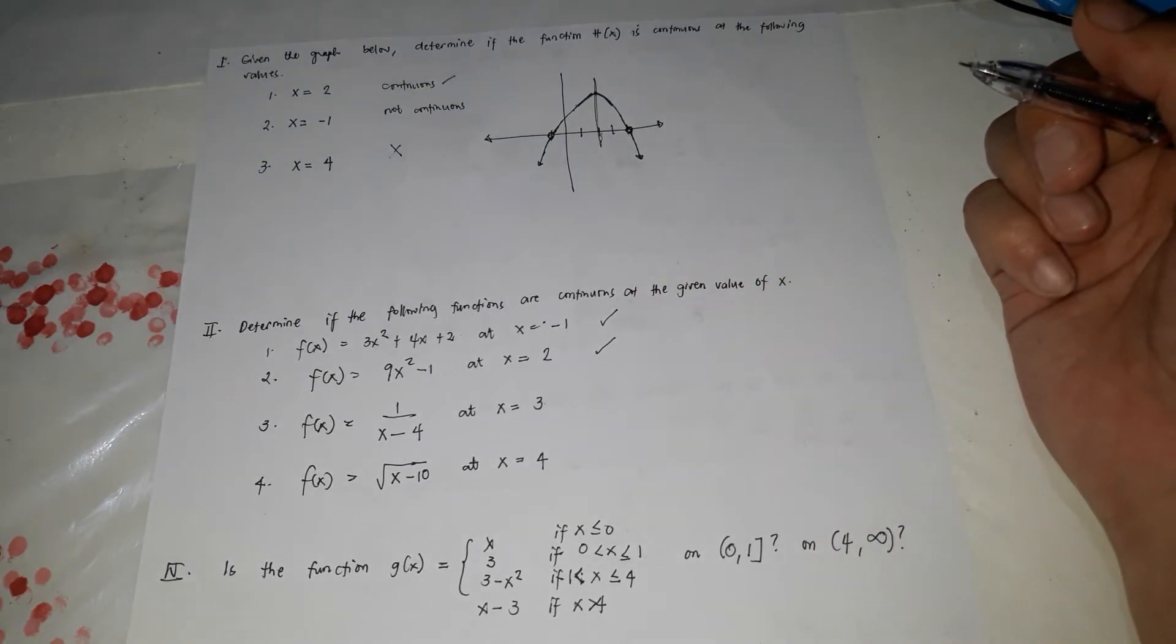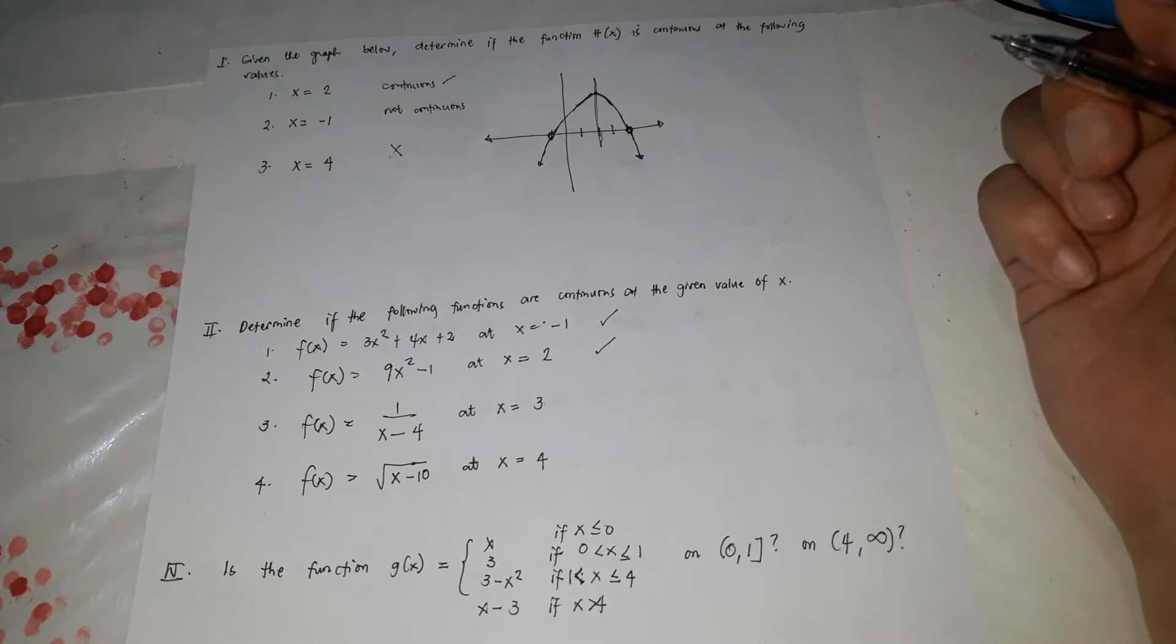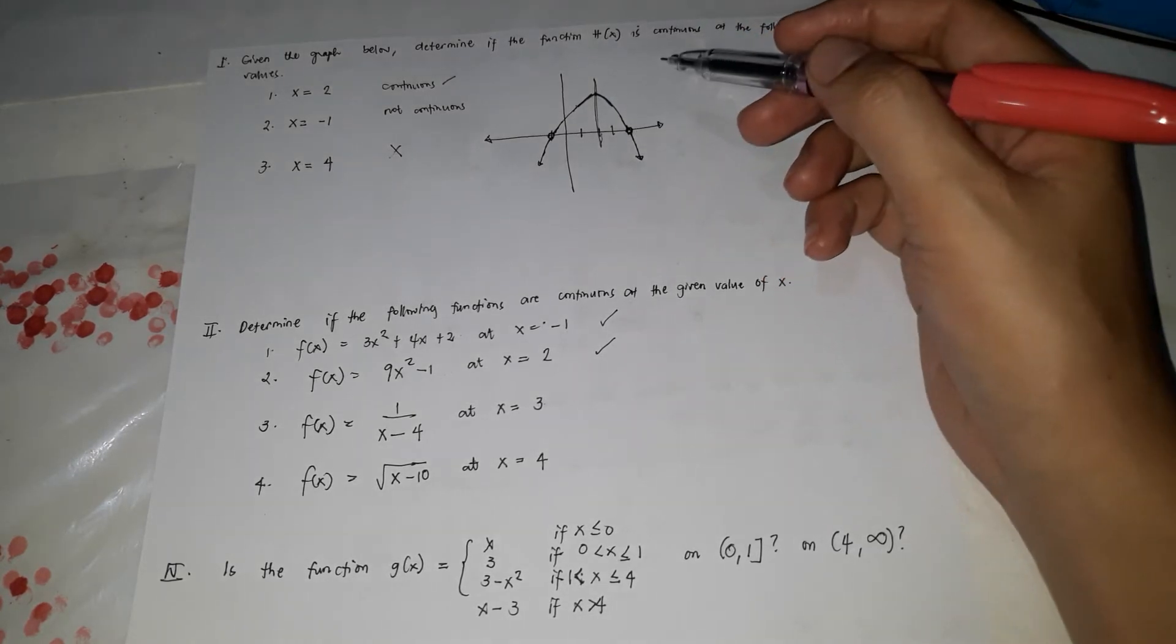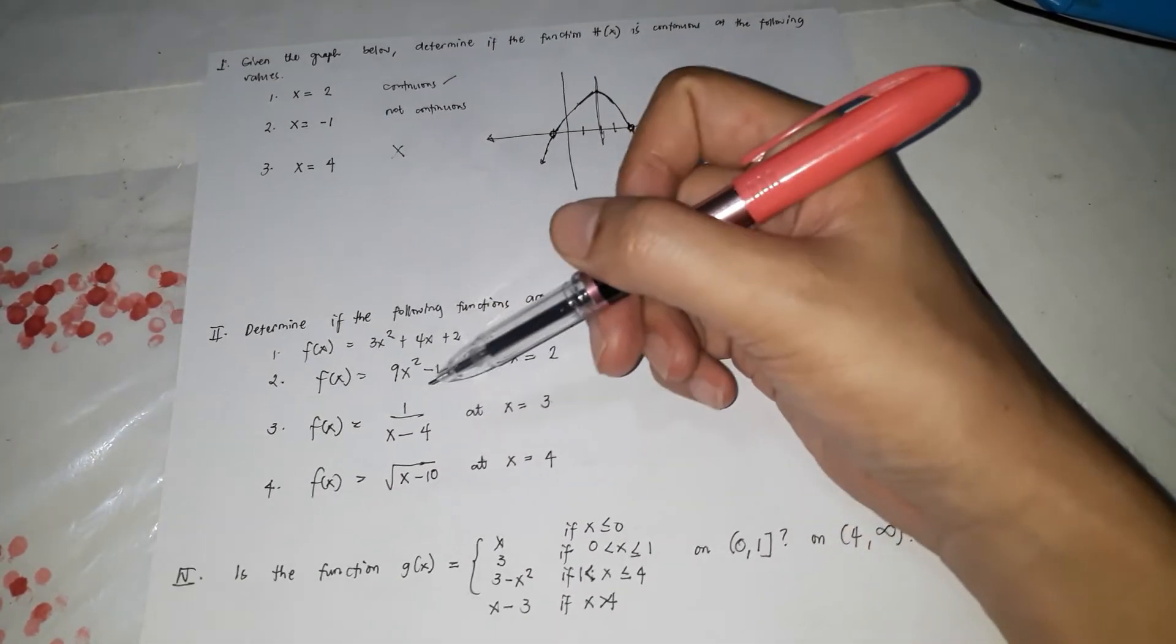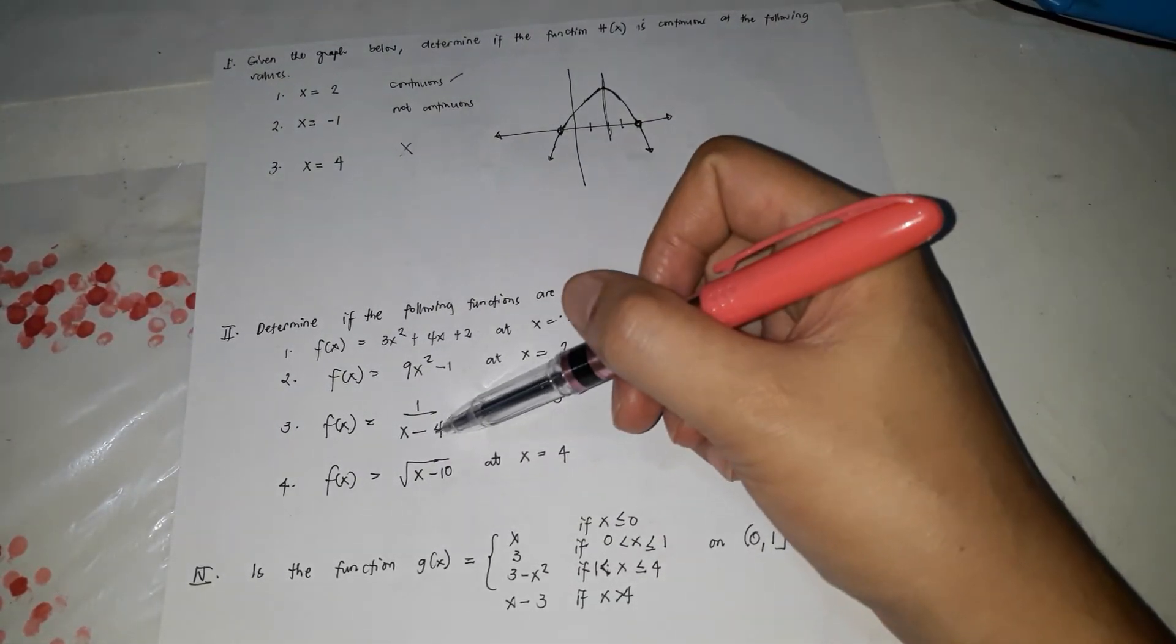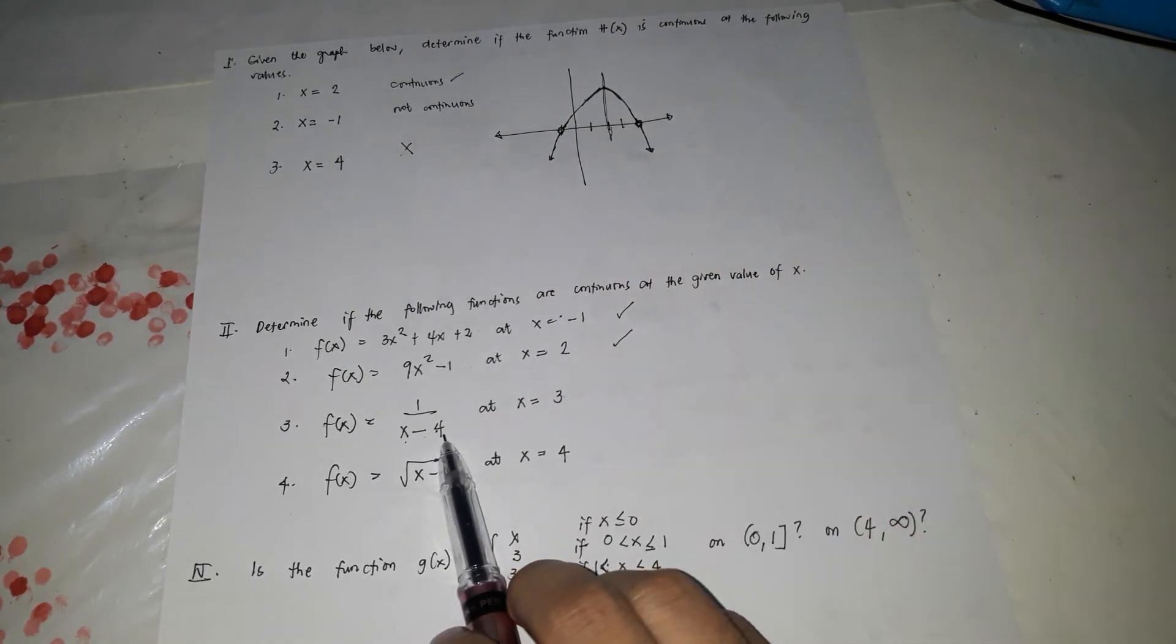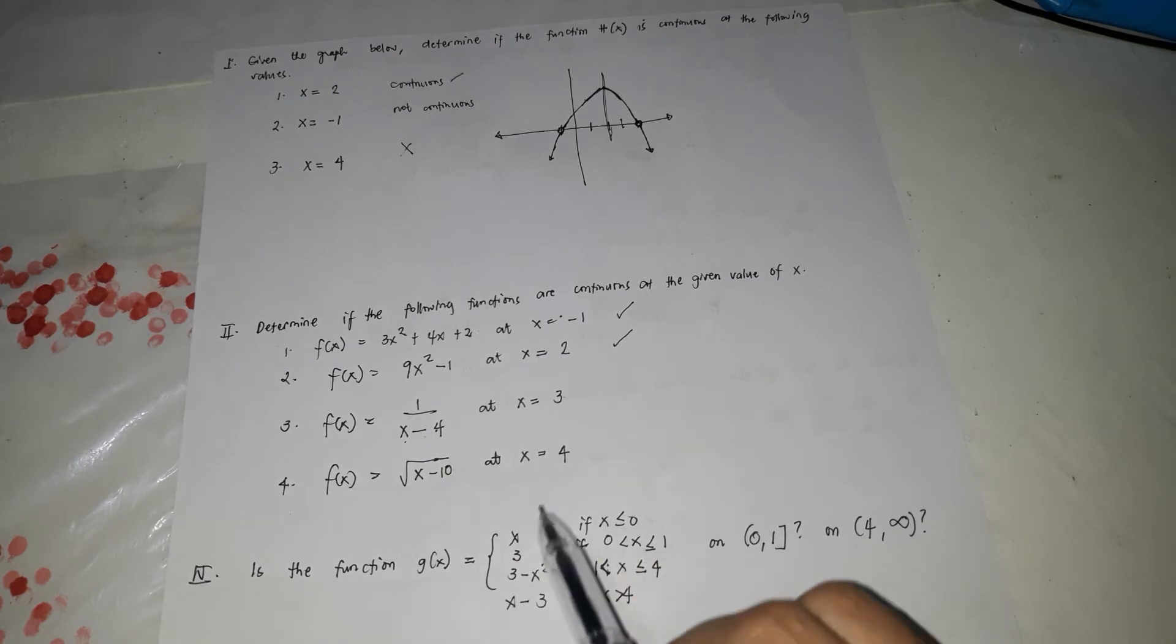But if it is not polynomial, just like number 3, 1 over x minus 4. So, how could you determine if open siya or close ang point? So, what you're going to do is, in this one, di ba? Magiging zero lang siya kapag, magiging zero lang ang denominator. Kapag 4, kasi 4 minus 4, it's zero. So, other values other than 4, that's check.